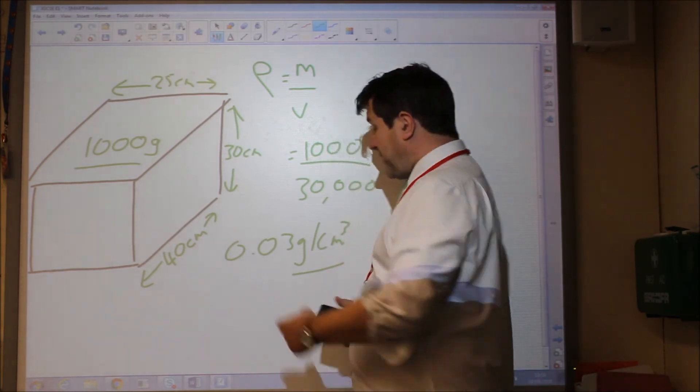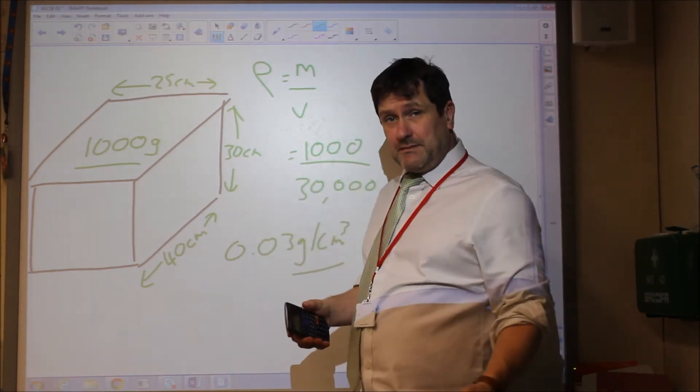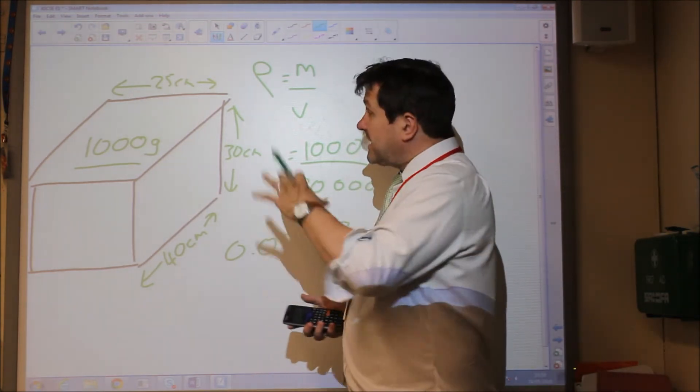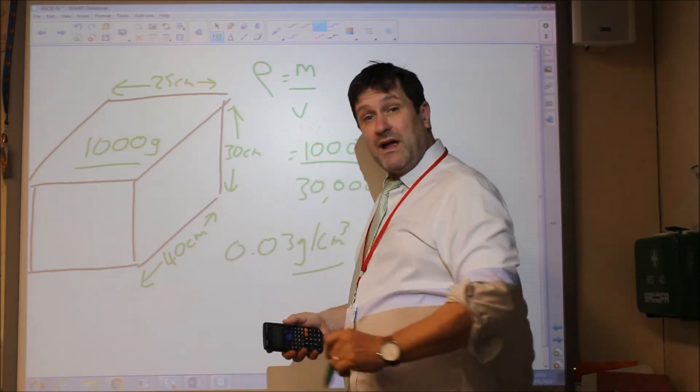So if we were staying in the units of grams and centimetres cubed, that would be a straightforward problem. However, if we have to do density in kilograms per metre cubed, which is the correct unit for density, then we would approach this problem in a different way.